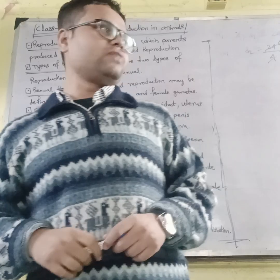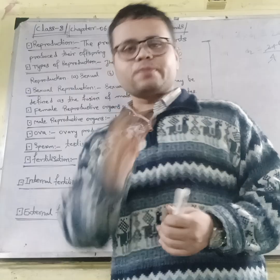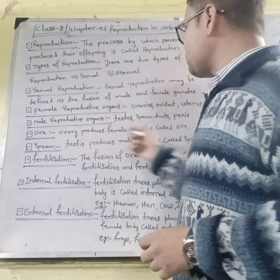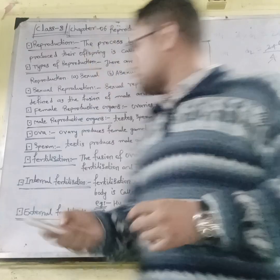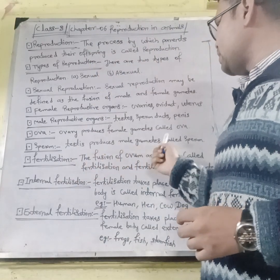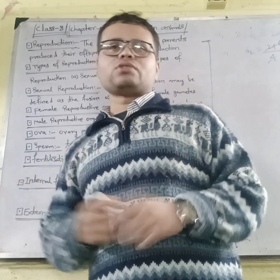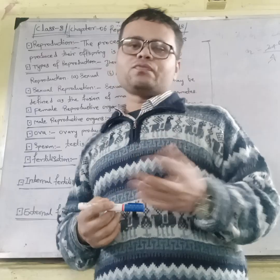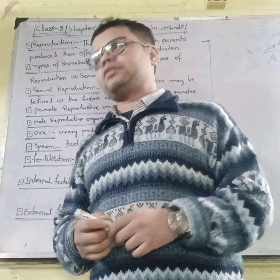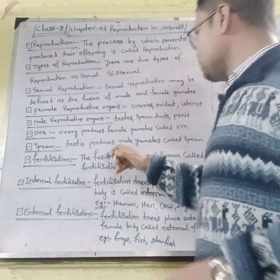The ovary produces the female gametes called ova. The testes produce the male gametes called sperm. Without the fusion of sperm and ova, fertilization is not possible, and after fusion, the offspring is produced.